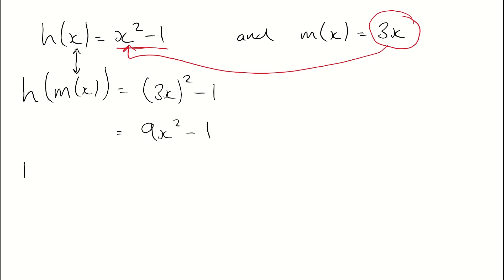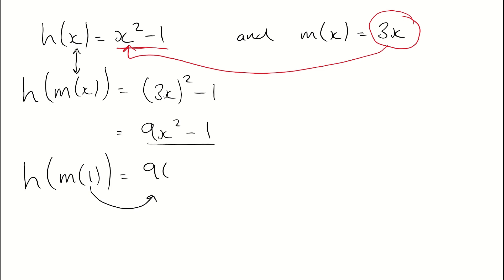If I wanted to work out what h of m of 1 was, I would put a 1 into this equation. So I get 9 lots of 1 squared minus 1, which is 9 minus 1, so just 8 in this case.